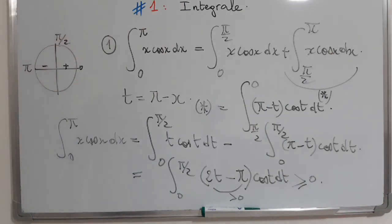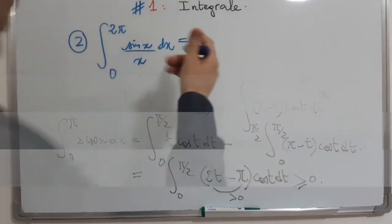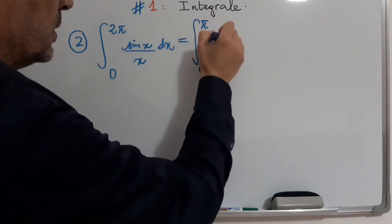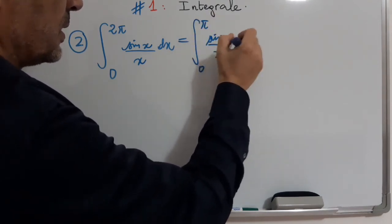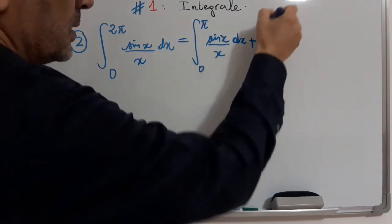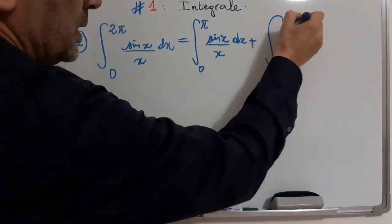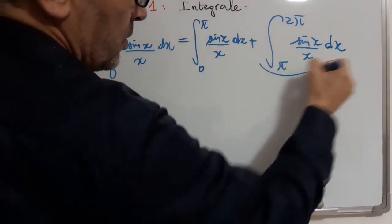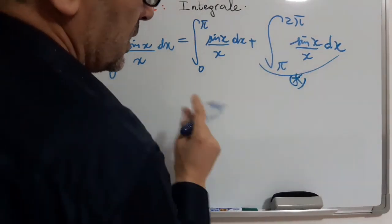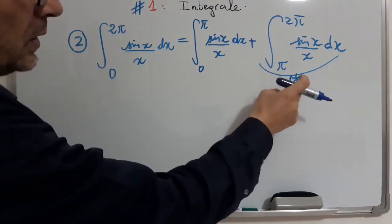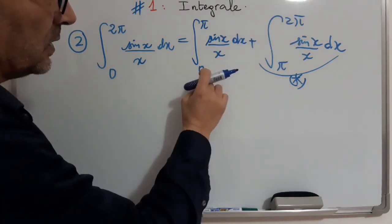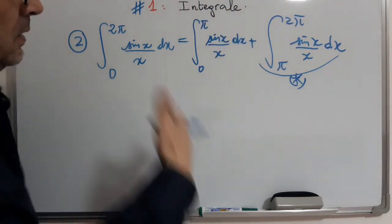Okay. Now, we will see the second integral. We do the following: 0 to π sin x over x dx plus π to 2π sin x over x dx. We transform this integral in a way that we transform π to 2π into the interval 0 to π.